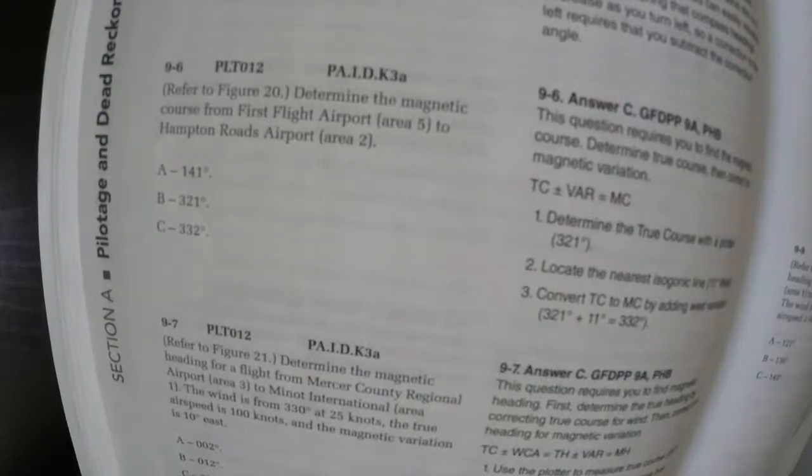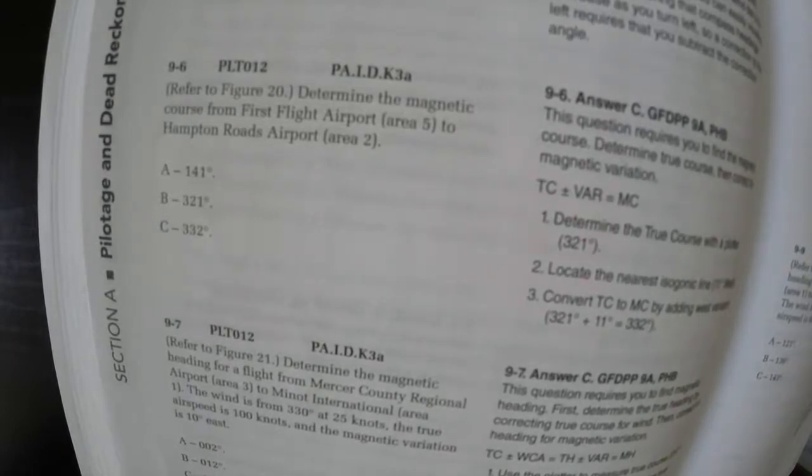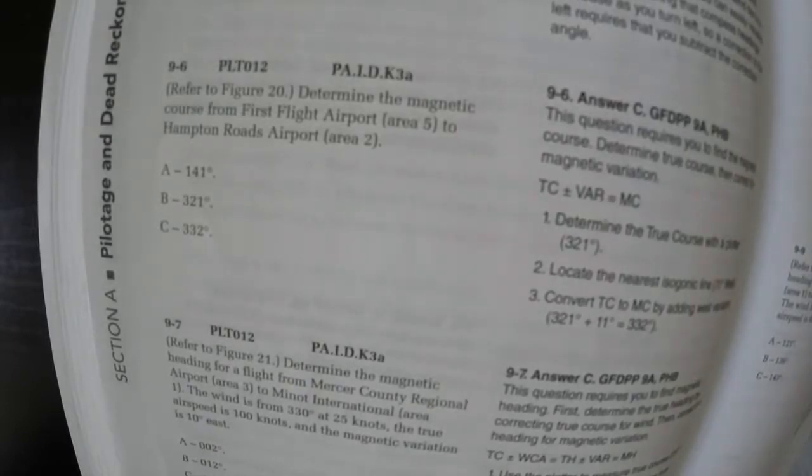Alright, so we're going to do problem 9-6. Refer to figure 20. Determine the magnetic course from First Flight Airport area 5 to Hampton Roads Airport area 3.